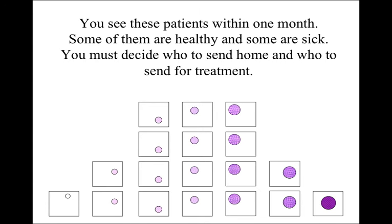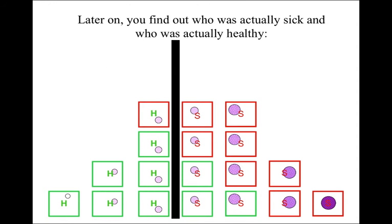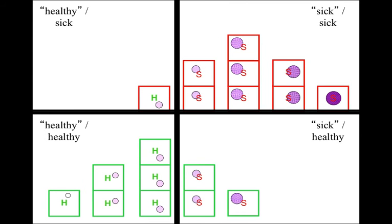You see these patients within one month. Some of them are healthy and some are sick, and you must decide whom to send home and who to send for treatment. You diagnose the people on the left-hand side as healthy and these people as sick, given this particular decision criterion. Later on, you find out who was actually sick and who was actually healthy — the actually healthy people are shown in green, the actually sick people in red. We can separate out these two distributions so you can see what their distribution looks like. We have a decision criterion shown here, and we can see the people who are actually sick and called sick, the people who are actually sick but mistakenly called healthy, the people who are actually healthy but called sick, and the people who are actually healthy and called healthy.